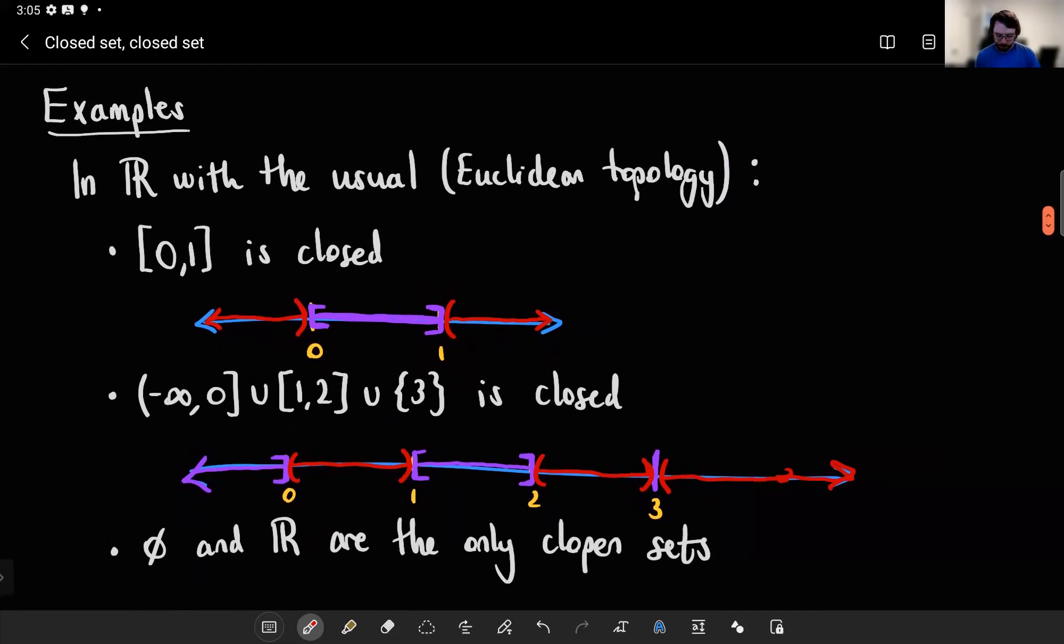And if we wanted to talk about clopen sets, well it turns out that the only clopen sets are the empty set and the whole space. Whenever that happens, by the way, you can say your space is connected. That's not something we'll talk about for a while yet, but being a connected space is logically equivalent to these two things being the only clopen sets.